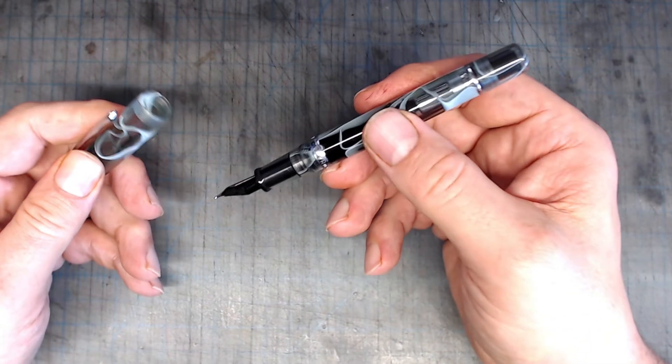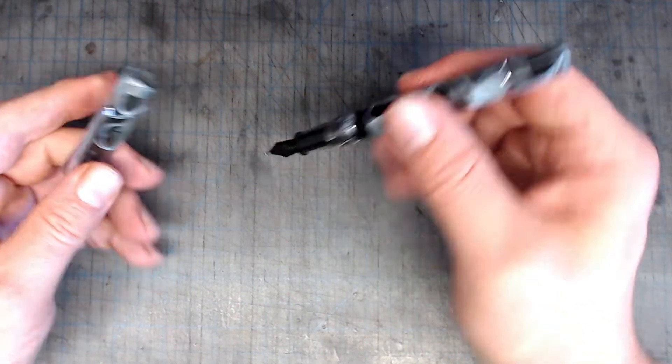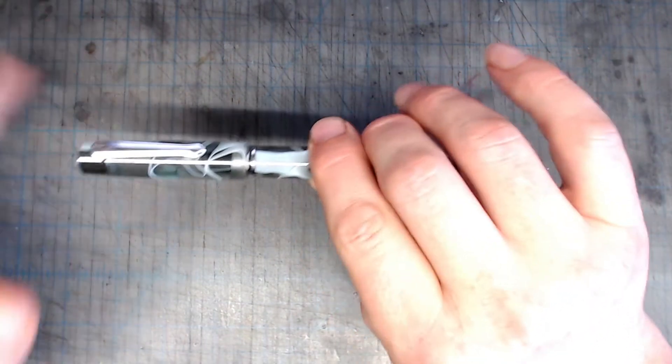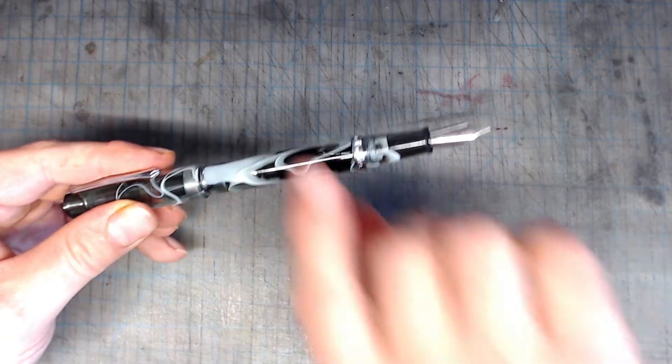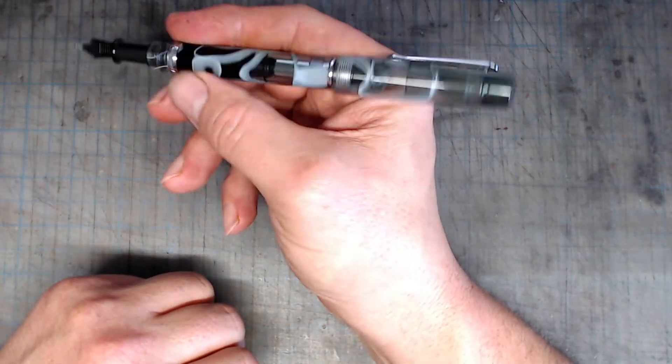If the pen is not designed to post, such as a Twsbi Vac 700, then fine. But if the pen does post, then it should post well. Why would you design it so that it posts so shallowly that it's completely too long and unusable?